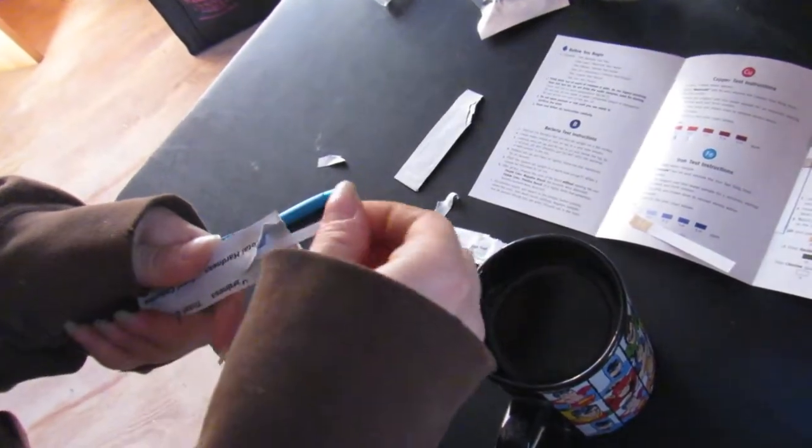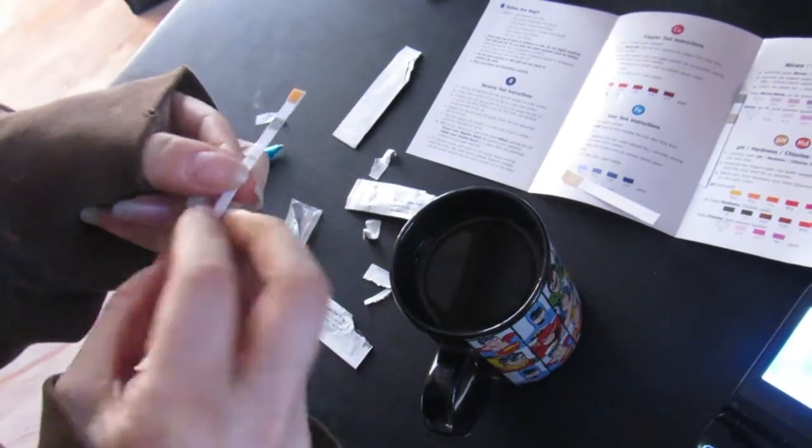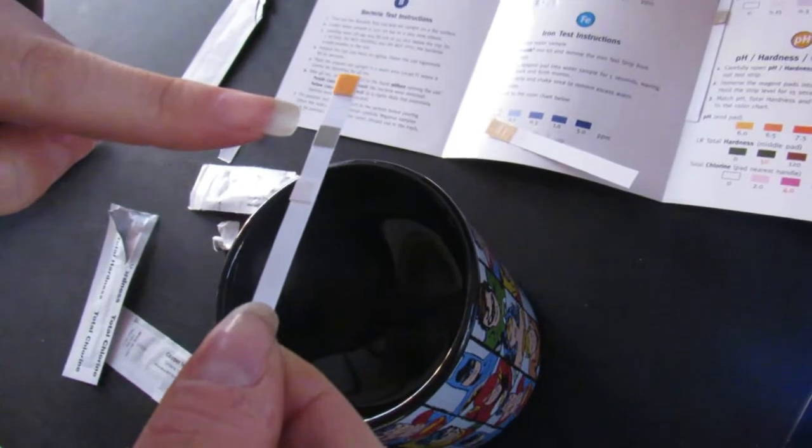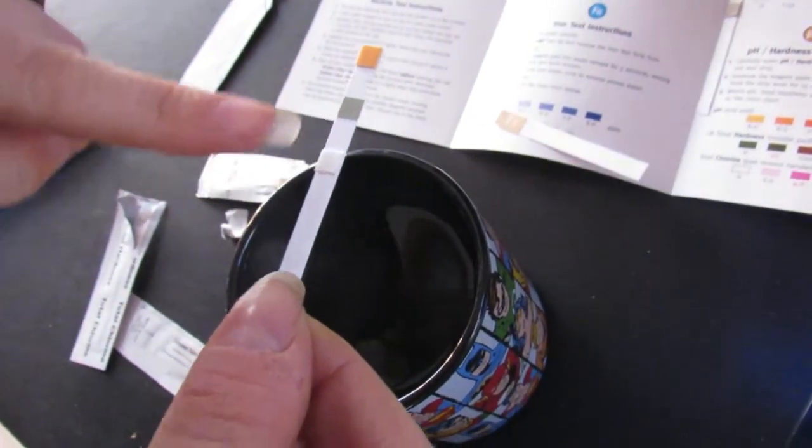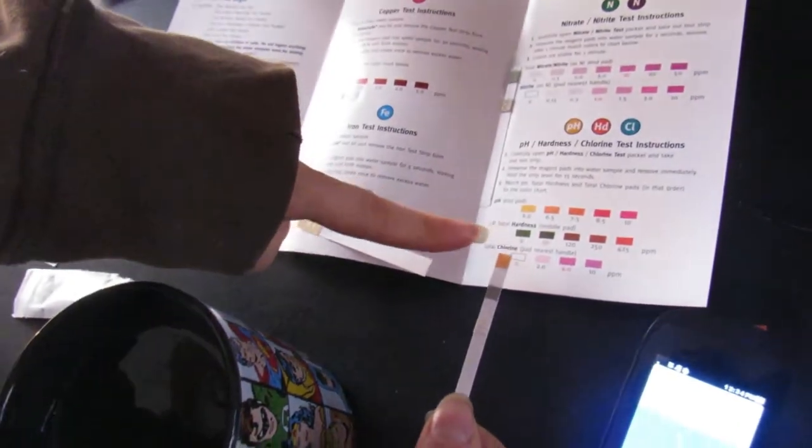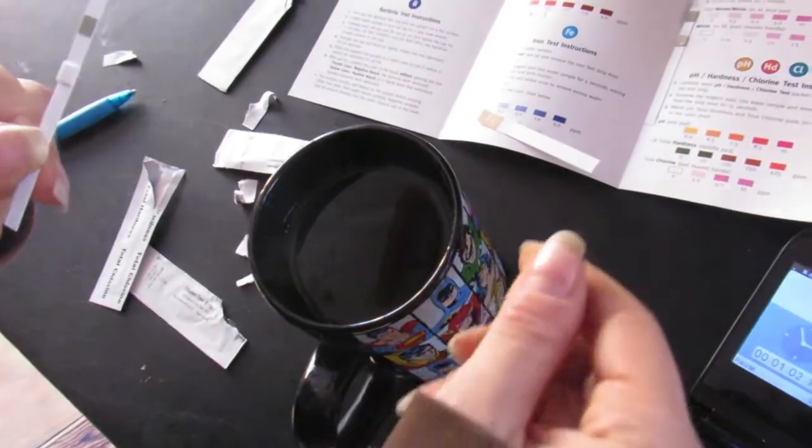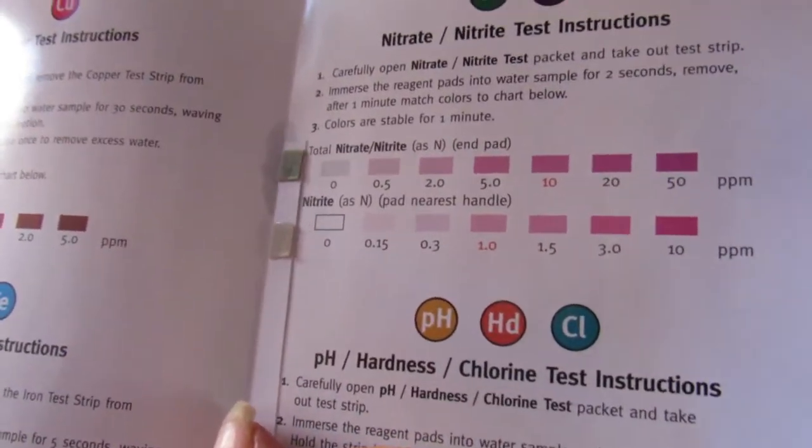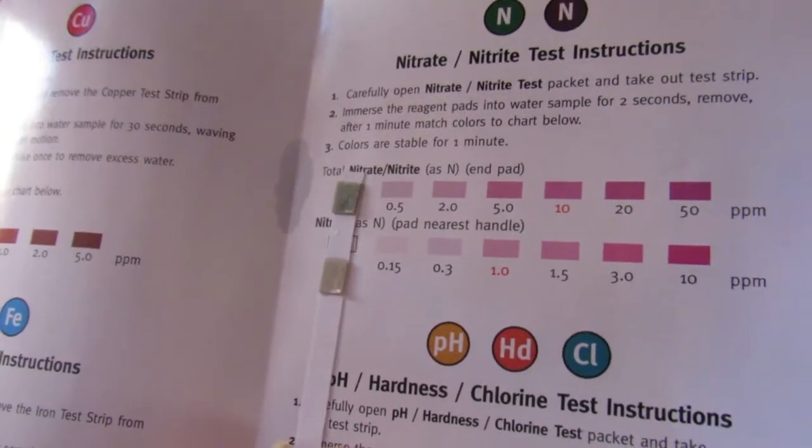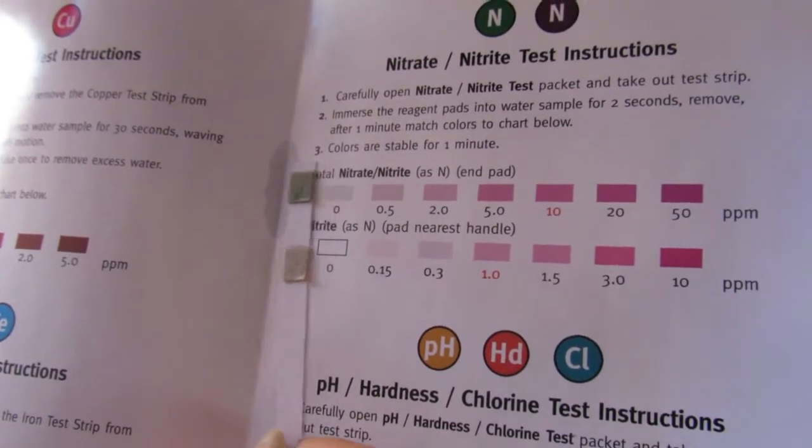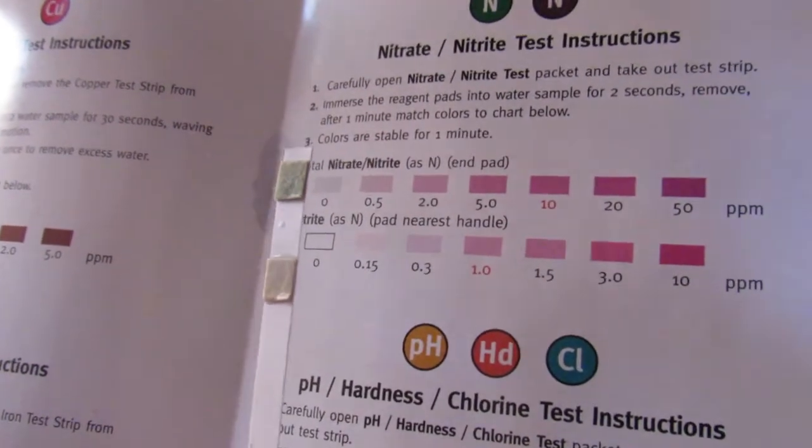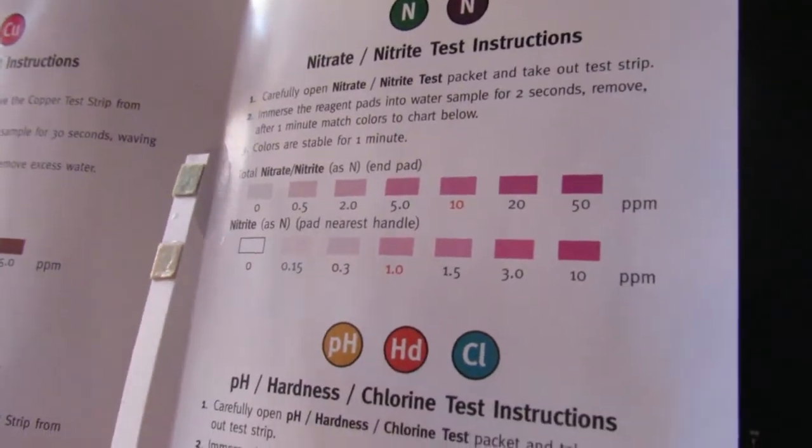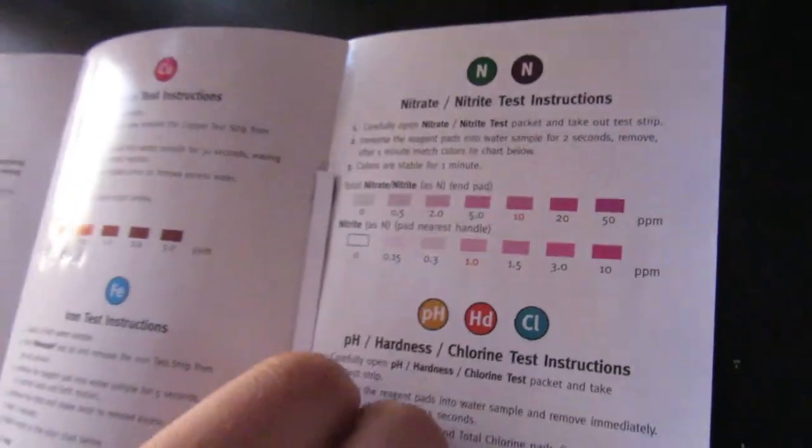Then we have a pH hardness chlorine test on here. We got three on here: pH, then the total hardness, and then the chlorine. All right, the one minute's up for the nitrates. Let's check that. And I'm not seeing any pink colors. What do you think on that one? It's a weird green. Looks good.